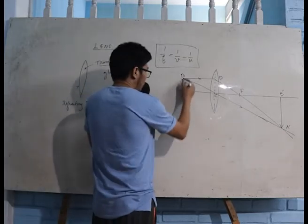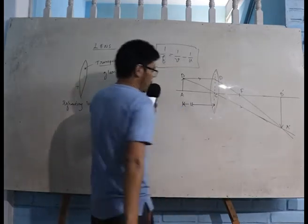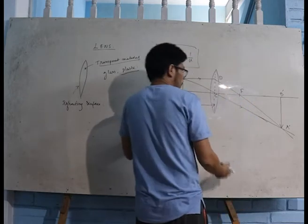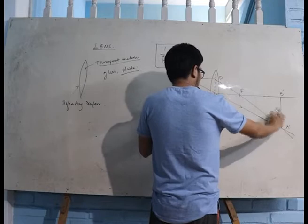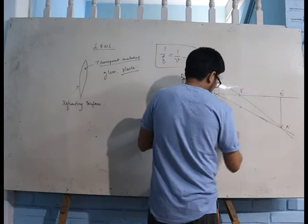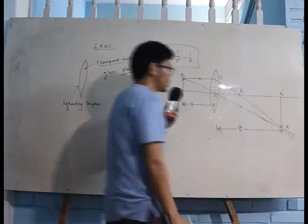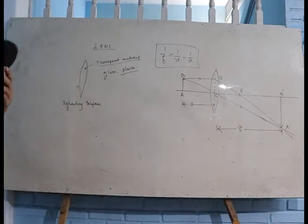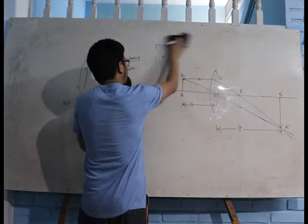AB is the object, and the object distance is denoted by u. A'B' is the image, which is magnified, real, and inverted. This image distance we will call v. So this is the ray diagram we need for the derivation of the lens formula.